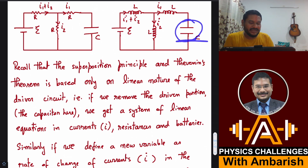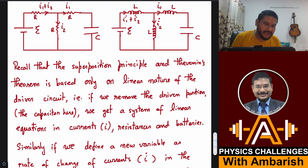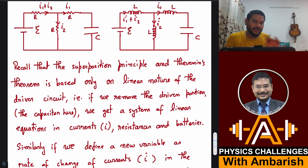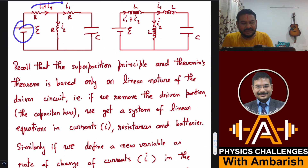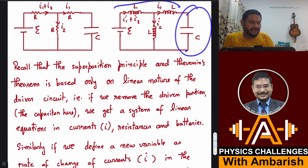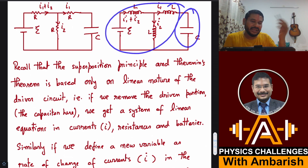In Thevenin's theorem, the driven portion could contain anything — a diode, a transistor, or any combination of resistors, batteries, inductors, capacitors, transistors, whatever. The driver just needs to be a linear circuit: only batteries and resistors. Similarly, linearity is maintained when the driver contains only batteries and inductors, or only batteries and capacitors; the driven circuit can be anything.